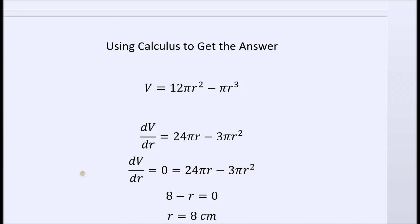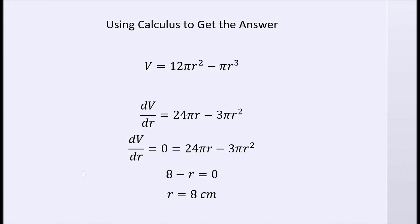Students don't have to know how to do this if they're in middle school or elementary school, but you might tell them that calculus is a way of getting a function and changing it to a new function that gives you the slope at every point. So the volume is 12 pi r squared minus pi r cubed. We take the derivative and we get 24 pi r minus 3 pi r squared.